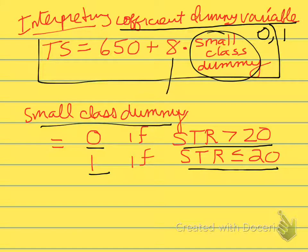Now we interpret this estimated coefficient, which here we say is equal to 8, as the difference between the average test score of school districts that have small classes, where the small class dummy is equal to 1, and school districts where they don't have small classes, that is the small class dummy is equal to 0. So 8 is the difference in the average test scores between the school districts that have small classes and the school districts that don't have small classes.